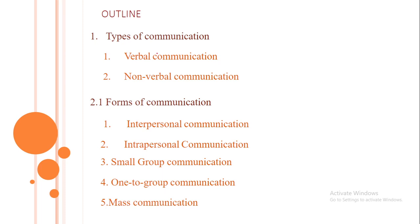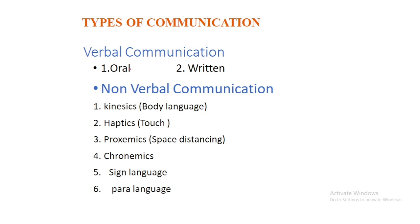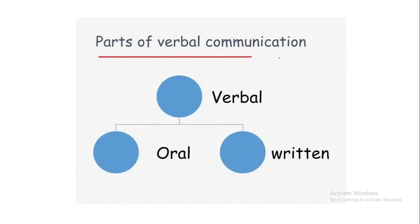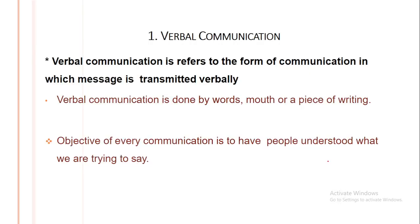In the forms of communication we will be looking at interpersonal communication, intrapersonal communication, small group communication, one-to-one, one-to-group communication, and mass communication. The two basic types of communication are verbal communication and nonverbal communication. In verbal communication we have two types: oral communication and written communication. In nonverbal communication we have kinesics, haptics, proxemics, chronemics, sign language, and paralanguage.